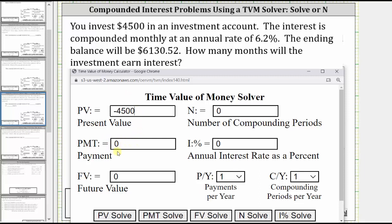There are no regular payments and therefore the payment stays at zero. I percent is 6.2, the annual interest rate as a percent.